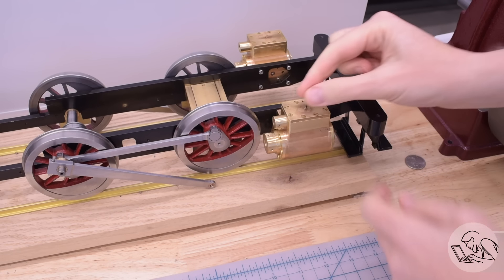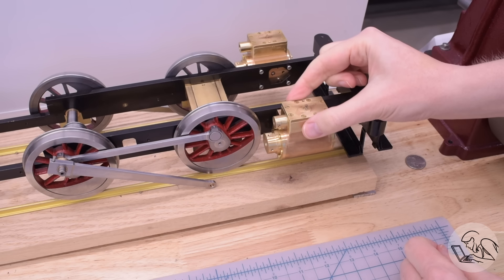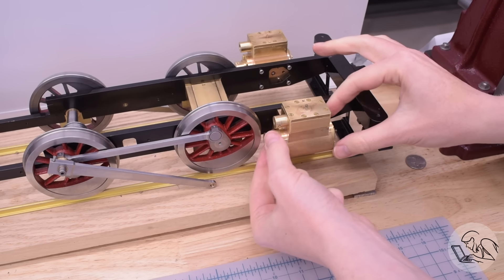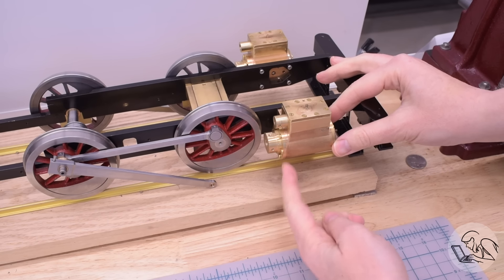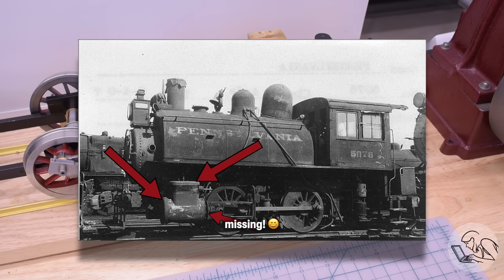When last we saw our cylinder and steam chest assembly, it was looking like this. Basically functional, but missing some decorative covers that go over the ends and the top. The prototype has these covers as well, of course, which is why we're making them.